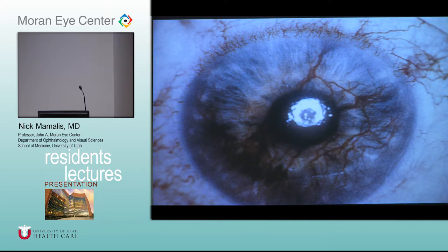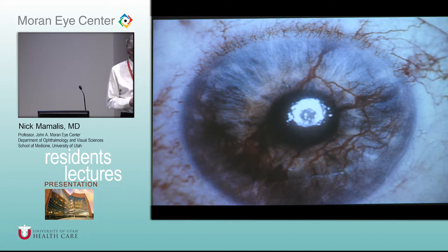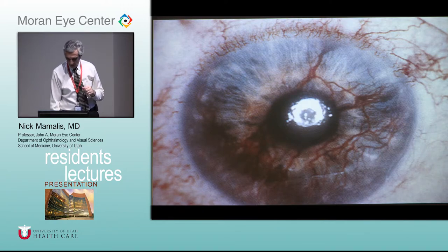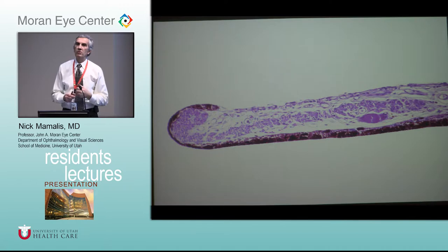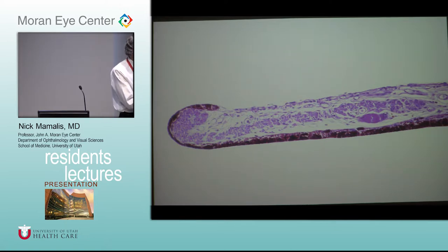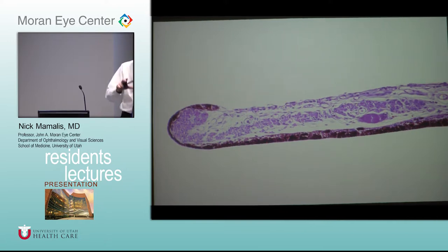What do we call this? People call this rubeosis — rubeosis iridis. When it gets this bad, ropiosis — because those big dilated vessels look like ropes. So this is ropiosis: neovascularization of the surface of the iris secondary to chronic ischemia. Looking at the iris in cross-section, you can see little blood vessels on the surface, and the pupil margin is turned in — like entropion. That posterior pigment epithelium is being pulled around the corner.